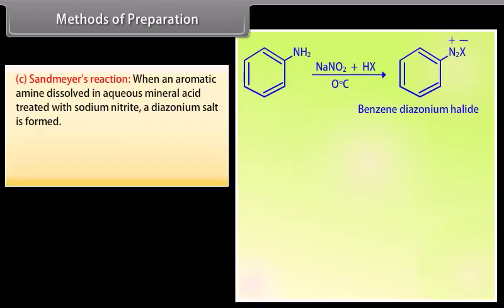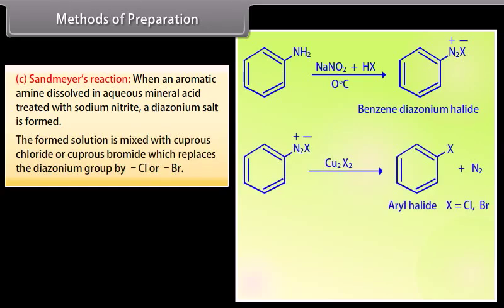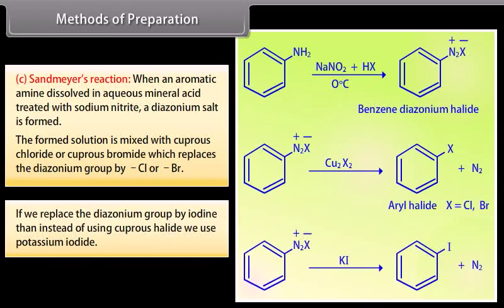Methods of Preparation. Sandmeyer's Reaction. When an aromatic amine dissolves in aqueous mineral acid treated with sodium nitrate, a diazonium salt is formed. The formed solution is mixed with cuprous chloride or cuprous bromide which replaces the diazonium group by Cl or Br. If we replace the diazonium group by iodine, then instead of using cuprous halide, we use potassium iodide.